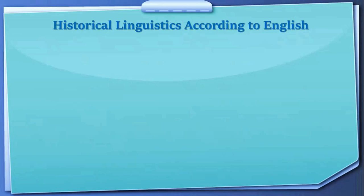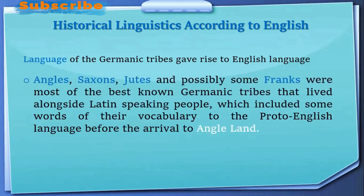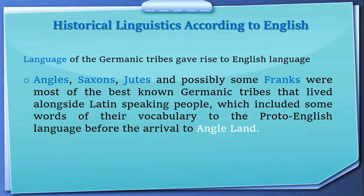Here we talk about historical linguistics in relation to English. The language of Germanic tribes gave rise to the English language. The Angles, Saxons, Jutes, and possibly some Franks were the best-known Germanic tribes that lived alongside Latin-speaking people, and they contributed words from their vocabulary to the Proto-English language before their arrival to Angle Land. This is how England came into being — through the combination of the Angles, Saxons, and Jutes — and this is the history of the English language as studied in historical linguistics.